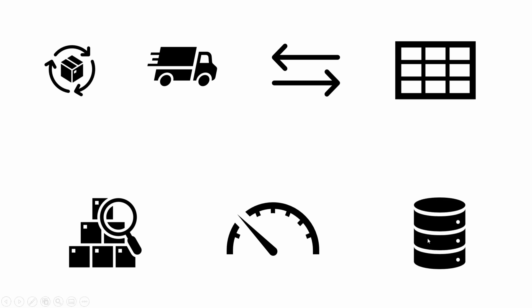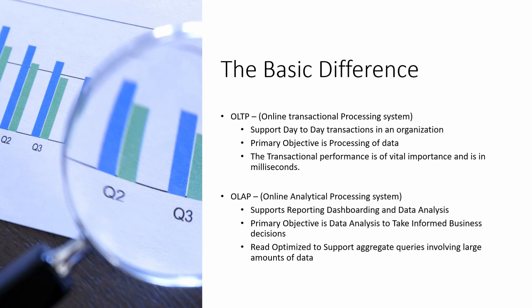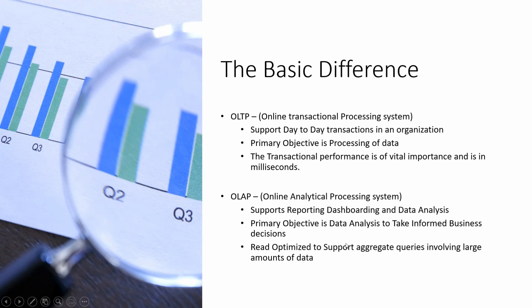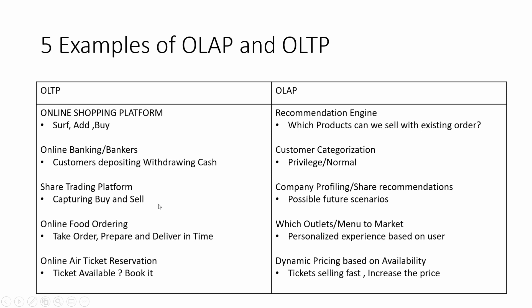You should always start with the difference in purpose they serve and move from there to the minute technical specifications. OLAP, which stands for Online Analytical Processing, forms the basis for reporting and dashboarding in an organization. The primary objective here is data analysis to take informed business decisions. OLAP systems are optimized to run complex aggregated queries efficiently. Let's dig into this a little more with five practical examples.